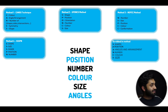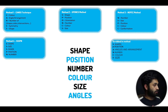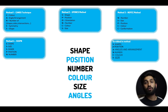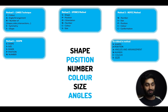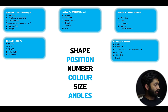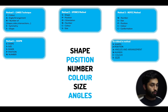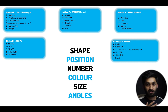Having gone through all the mnemonics, the most common patterns across all methods are: shape, position, number, color, size, and angle. These are what you need to look out for whilst tackling abstract reasoning questions. You can use any of the other methods too, but these core patterns are the ones to keep an eye out for.